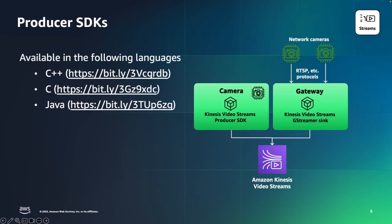To get started, you can find all of our producer SDKs available in the languages listed here out on GitHub — short links are included for convenience. Customers typically clone these repositories and build them onto camera devices to stream media to the cloud, or use them in gateway devices deployed on premises to obtain media from network cameras such as IP cameras over network protocols including RTSP, ONVIF, or other networking protocols. Kinesis Video Streams also provides a GStreamer plugin — GStreamer is an open source framework not provided by AWS, but Kinesis Video Streams provides this because it's a common way for customers to build media pipelines to obtain video and/or audio data from existing cameras and stream to Kinesis Video Streams.